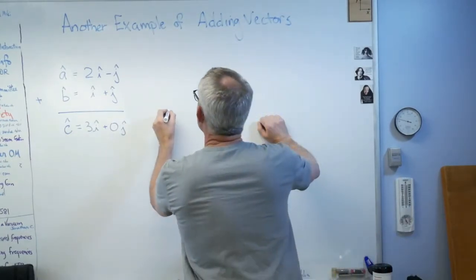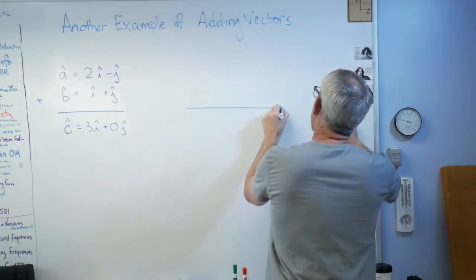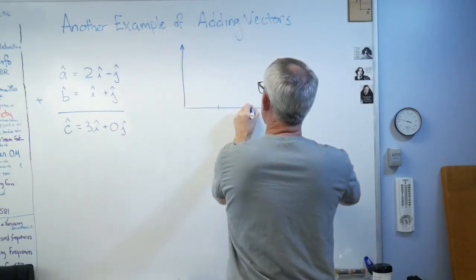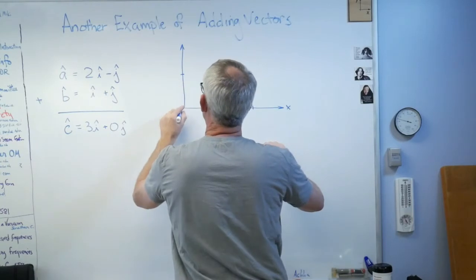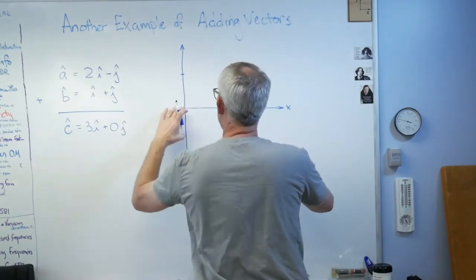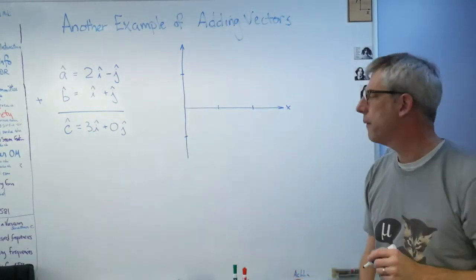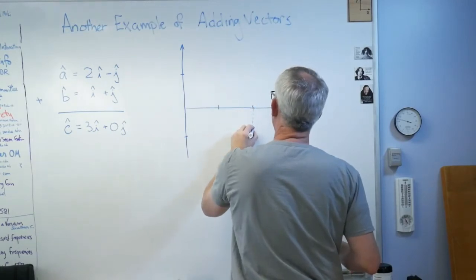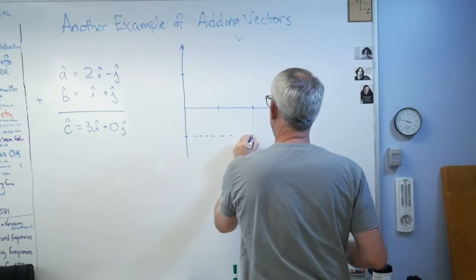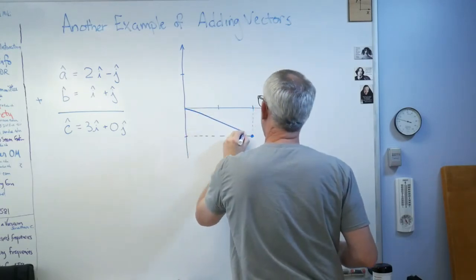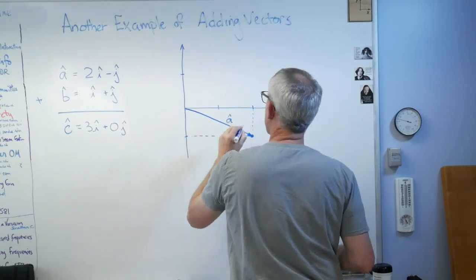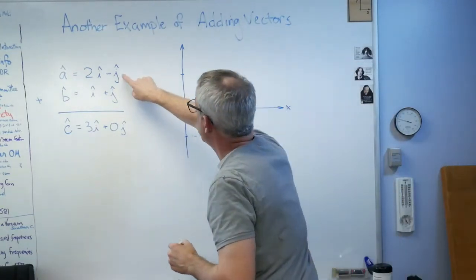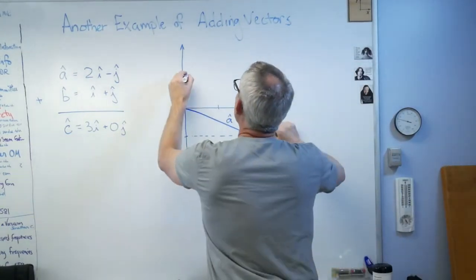What does this look like? Let me draw a picture. There's x, there's y. Let's see if I can do that. Well, â is 2î minus ĵ, so it goes out to here and down. That's â. It starts at (0,0) and goes to (2,-1). That's the recipe for how to draw that vector.